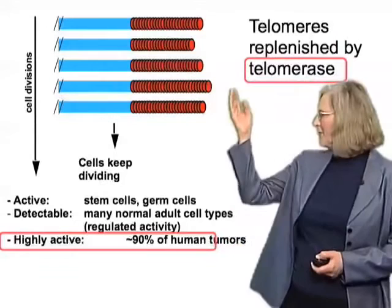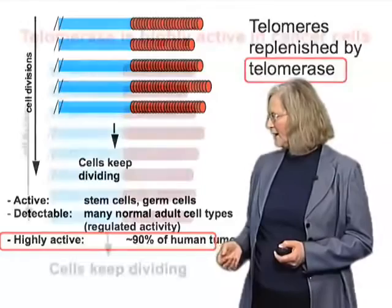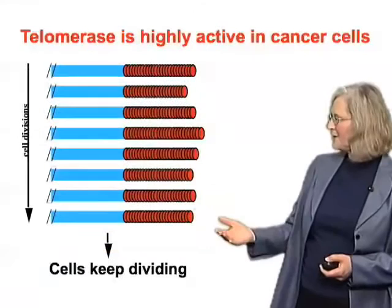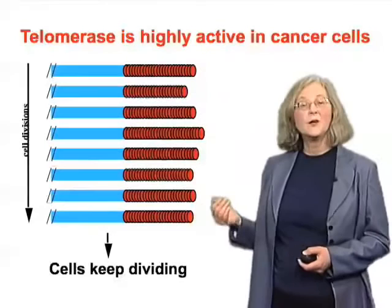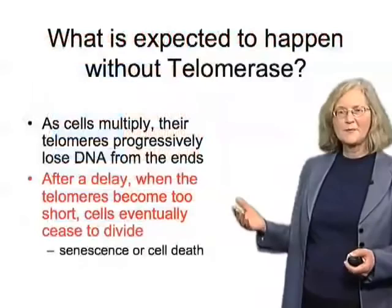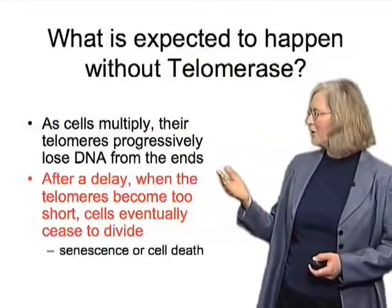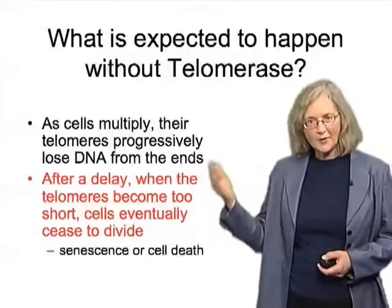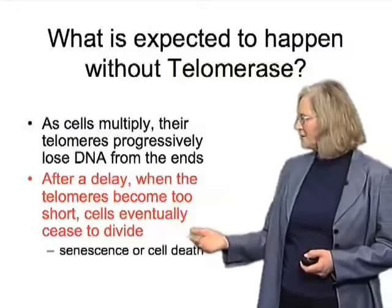Since telomerase is highly active in human tumors, one could imagine inhibiting telomerase as a good target for trying to inhibit the growth of cancer cells. So let's think about what is expected to happen if you don't have telomerase in cancer cells. Cells multiply and their telomeres will progressively become shorter and shorter if there isn't telomerase to counteract that shortening, and eventually when the telomeres get too short, the cells would cease to divide.